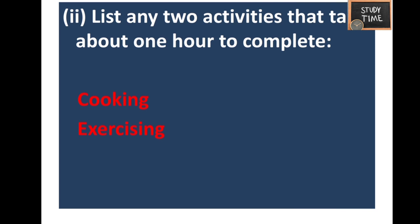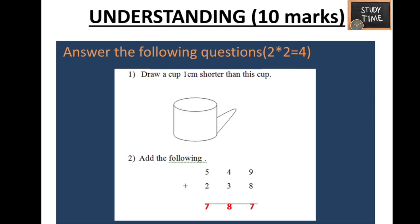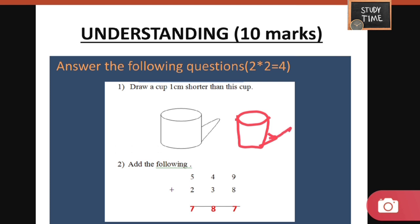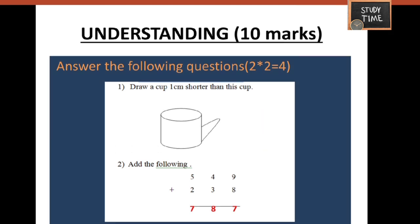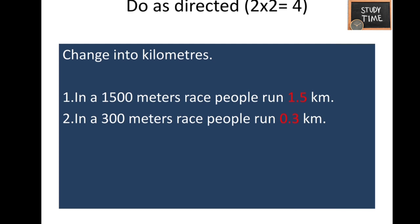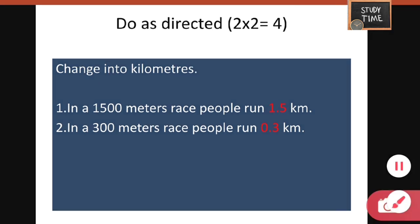Here I have given cooking and exercising — you can write any other two activities. Draw a cup, then draw a cup one centimeter shorter than this cup, so you can approximately measure one centimeter shorter and draw it. Add the following — the answer is 787.